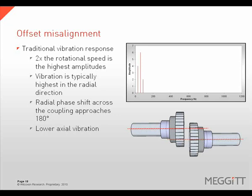Offset misalignment is traditionally characterized with a 180 degree phase shift across the coupling in the radial direction. It is important to look at the machine as a whole and not just the readings across the coupling. Pure offset misalignment will typically exhibit lower axial readings when compared to the radial readings.